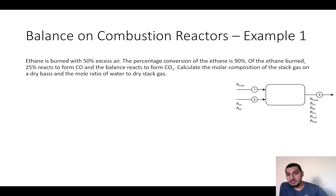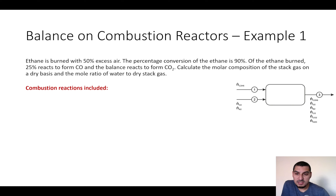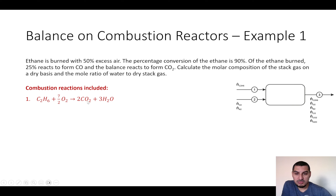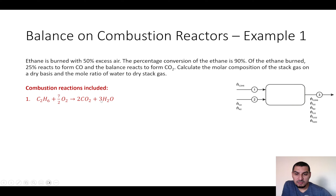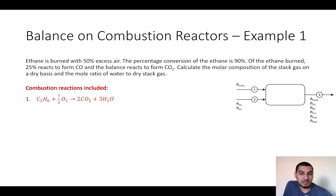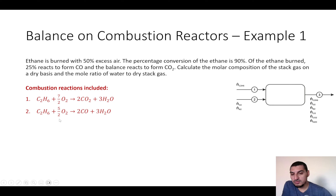We can list the reactions. Ethane is C2H6. For complete combustion: C2H6 + 7/2 O2 → 2CO2 + 3H2O. Two carbons give two CO2, six hydrogens give three H2O, and balancing oxygen gives 7/2 O2. For incomplete combustion it's the same but producing CO instead of CO2, requiring 5/2 O2.